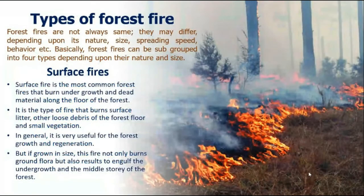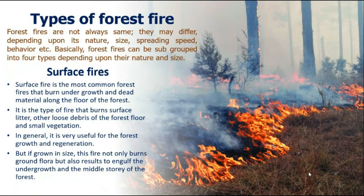Now we are going to discuss the types of forest fire. Based on forest fuels, forest fires can be categorized by nature, size, spreading speed, and behavior. Surface fires burn undergrowth — grasses, dead material on the forest floor, and loose debris vegetation. You can see in pictures that grasses burning on the forest floor represent surface fire.